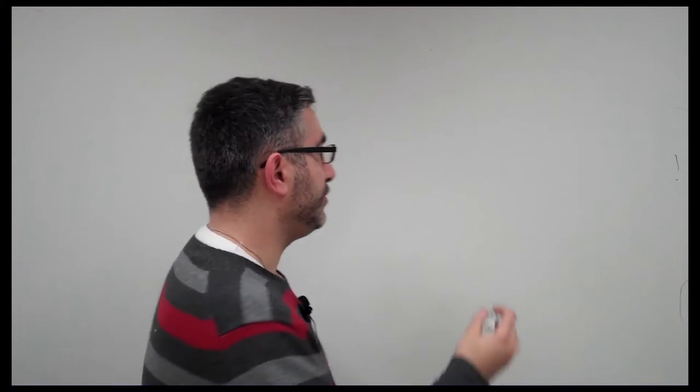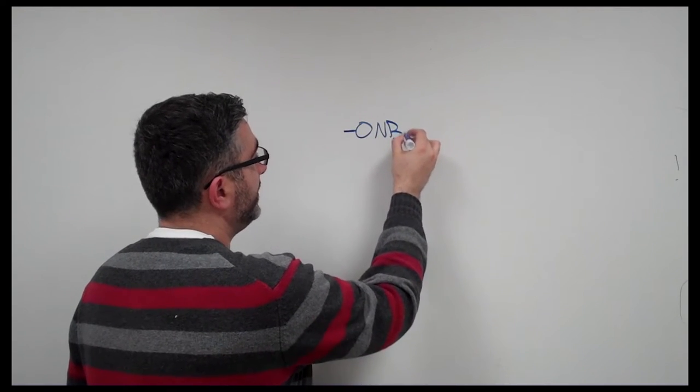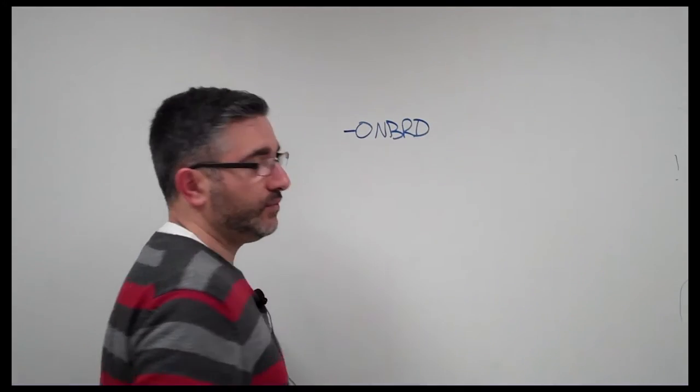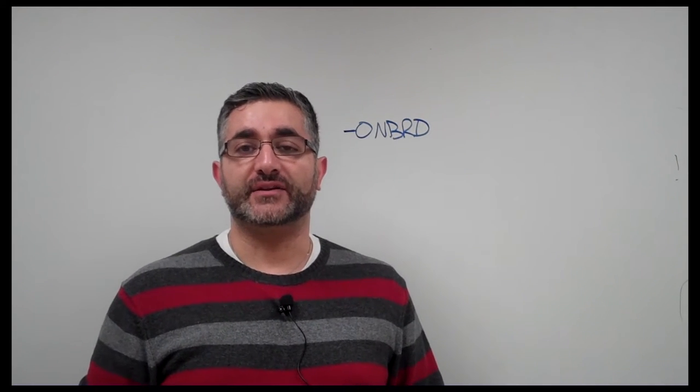Enterprise onboarding has a standalone SKU, and the SKU looks like dash ONBRD. Basically when you install that SKU, what it allows you to do is provision a device.